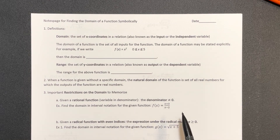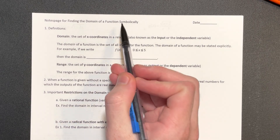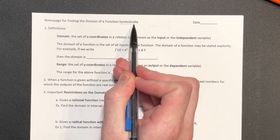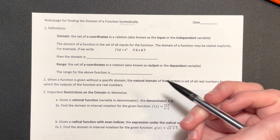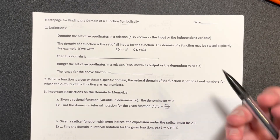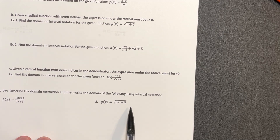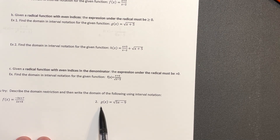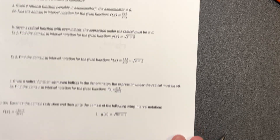For today's lesson we're looking at the domain of a function. We've already talked about this if we've been given a graph, but we are looking at this symbolically this time. It's important when we look at a function — just the equation — that we can decide what are the possible inputs for the function. So what's the domain just based off of what's been given to us.